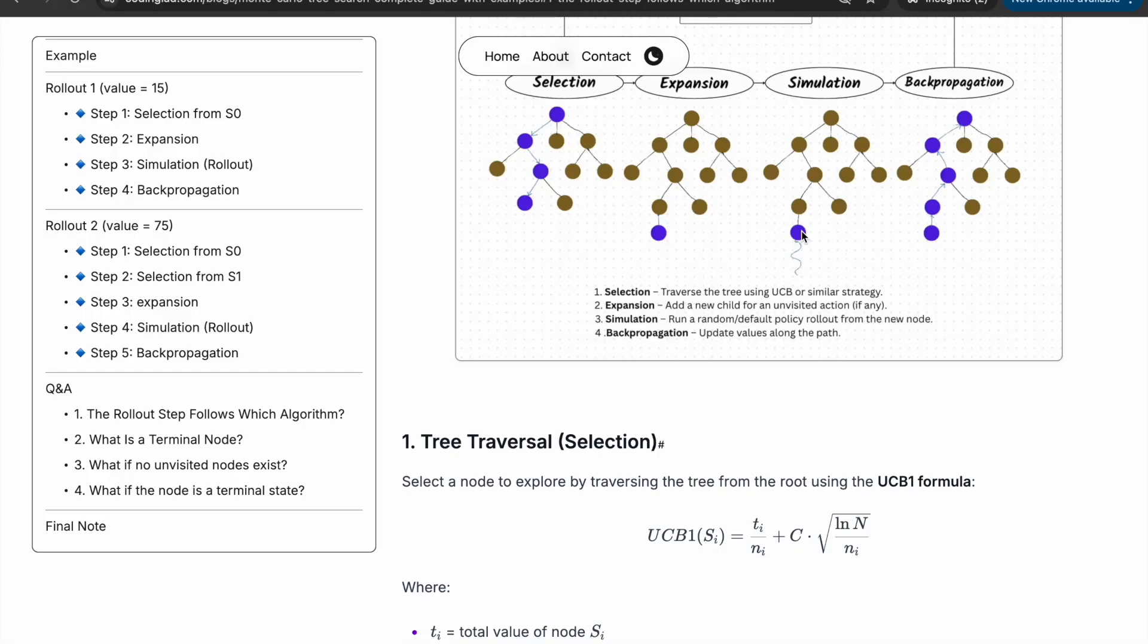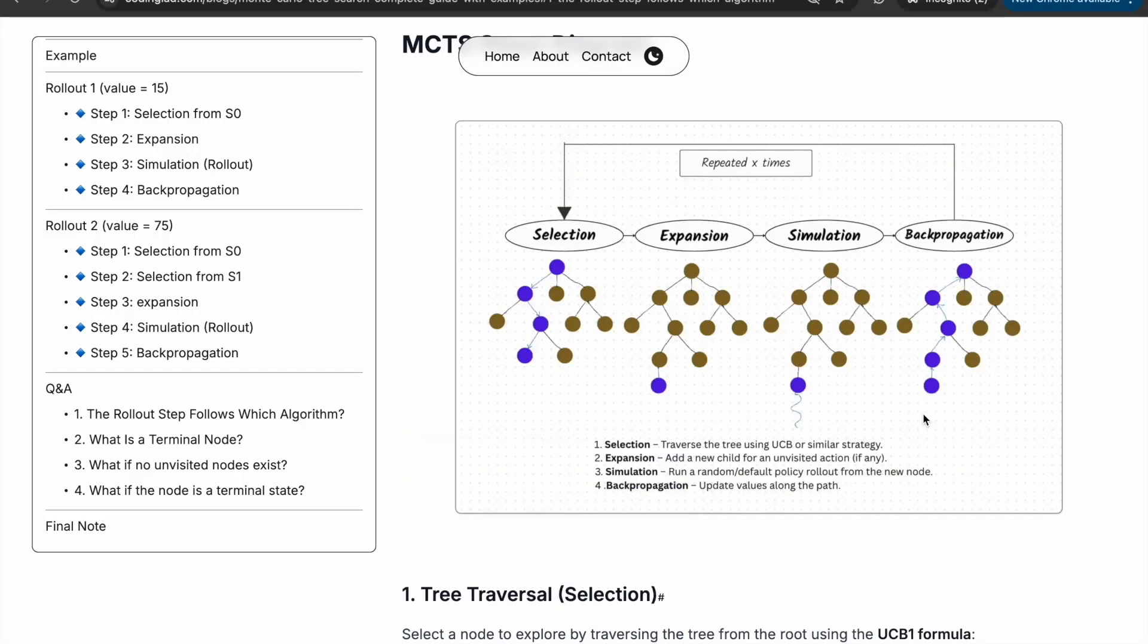A terminal node is a state where the game ends. Once the terminal state is reached, it returns a numerical reward like +1 for a win, 0 for a draw, or -1 for a loss, which is then used in the next step: backpropagation. The final step is backpropagation. We take the result of the simulation and backpropagate it up the tree. That means we update values like total reward and visit count of all the nodes in the path from the expanded node back to the root.